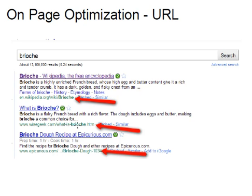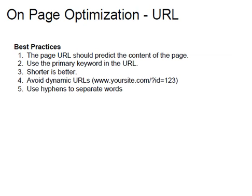You can see the top three listings have certain characteristics — they each have the word 'brioche' in their name, and there are a couple of other characteristics that we'll outline. These are the best practices for on-page optimization using URLs.